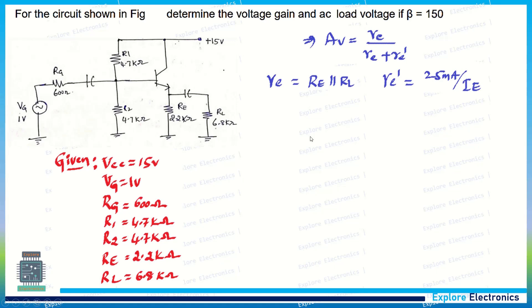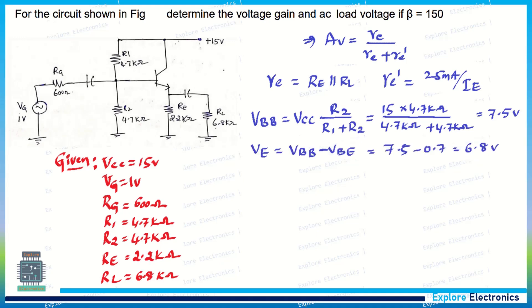Calculate VBB. It will be equal to Vcc × R2/(R1 + R2), which gives 7.5V. Using this we can calculate VE. Now VE is the emitter voltage, which means the base voltage minus VBE.